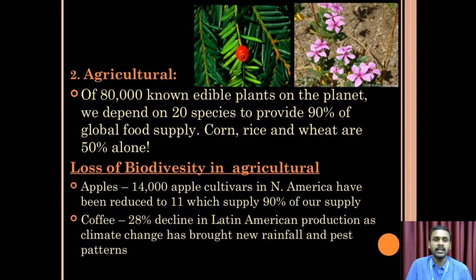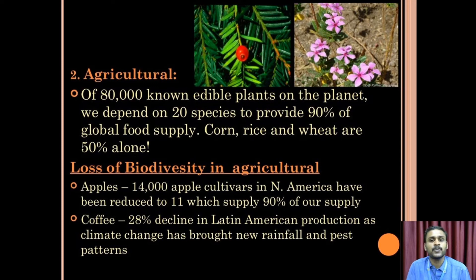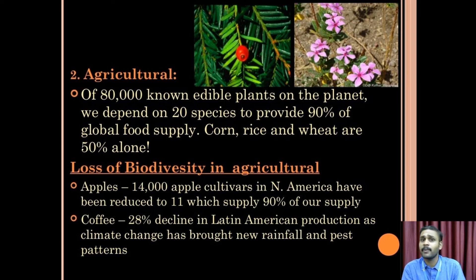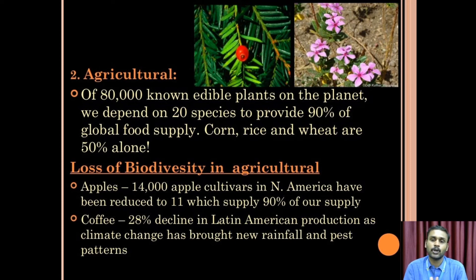For agriculture, there are 80,000 edible non-cultivated plants we depend on, but only 20 species provide 90% of global food. These 20 varieties include important crops like corn, rice, and wheat, which make up about 50% of all available food.